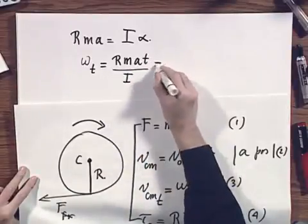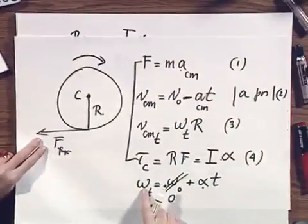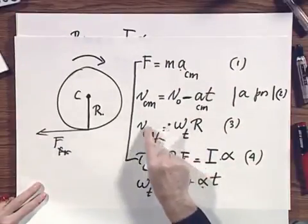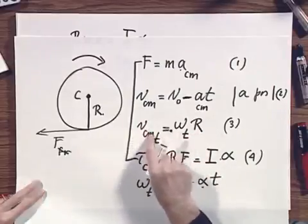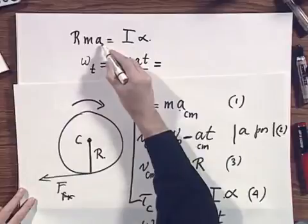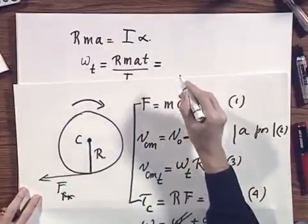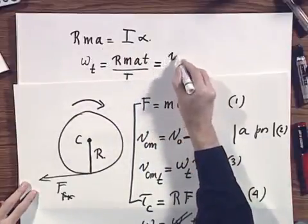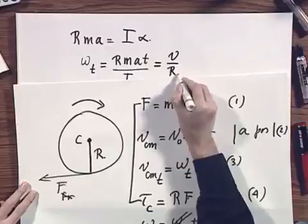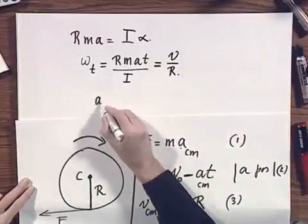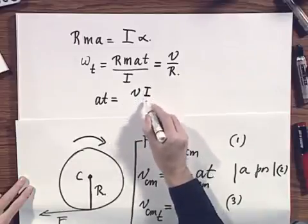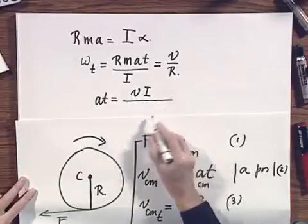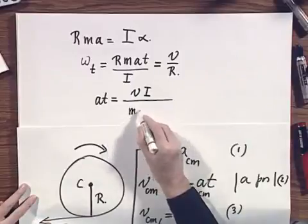This now, omega T, according to this equation, is also V center of mass divided by R. I will just write V for that, that is simpler, just as I have dropped A also the center of mass. So this now must become V divided by R. Therefore, AT becomes V times I, V being the final velocity of the plane, divided by M R squared.